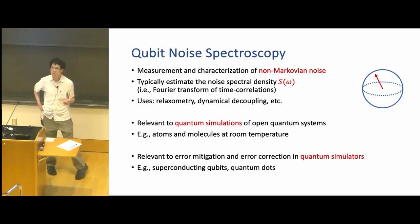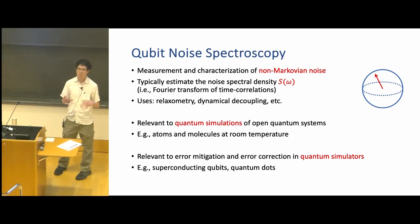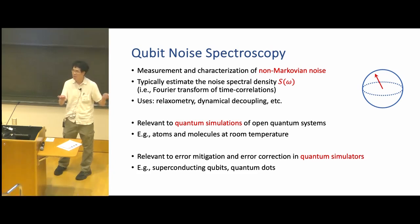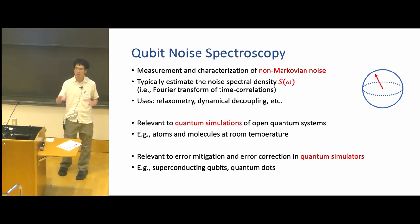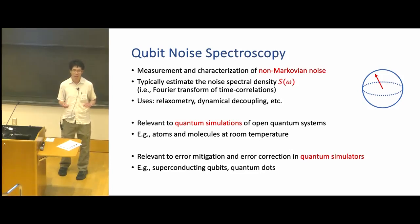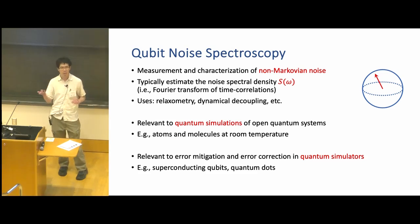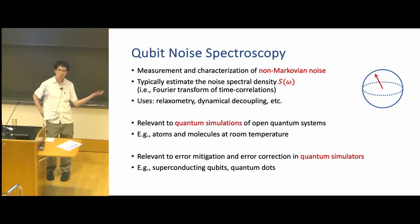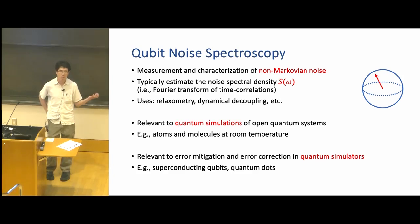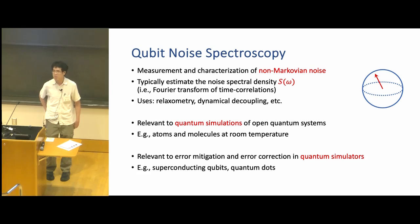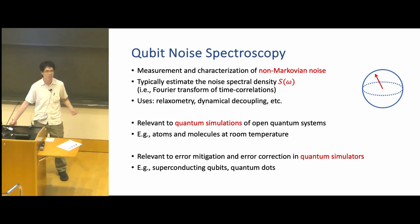In the context of quantum simulation, non-Markovian noise appears in two different ways, because there are two quantum systems of interest: the system you want to study and the simulator itself. On one hand, the system being studied could be an open quantum system — for instance, quantum phenomena in atoms or molecules at room temperature — and noise spectroscopy helps understand the environment coupled to it. On the other hand, quantum simulators typically have noise and decoherence requiring error mitigation, making noise spectroscopy important for modeling noise in superconducting qubits or quantum dots.